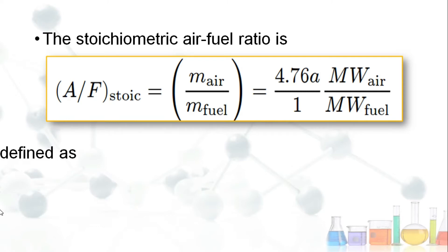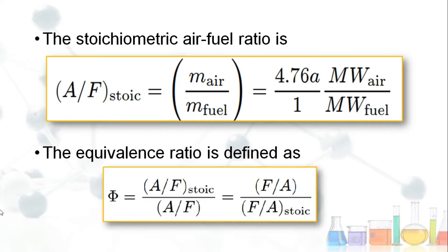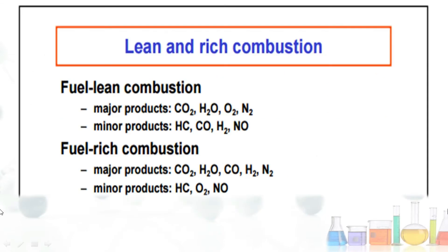Next comes the equivalence ratio, denoted by the letter phi (φ). It is defined as the stoichiometric air-fuel ratio divided by the actual air-fuel ratio in the combustion chamber. It can also be written as the fuel-to-air ratio divided by the stoichiometric fuel-to-air ratio.